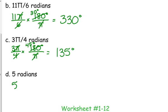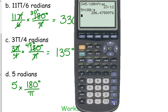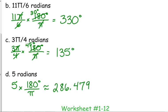We still multiply by 180 over pi, but this time there's no pi to cancel. So we just multiply completely out: 5 times 180 over pi. Please do not use 3.14 for pi — use the pi button on your calculator. This gives approximately 286.479 degrees.